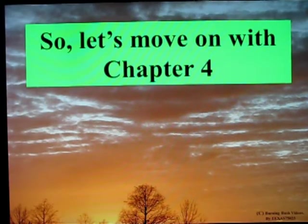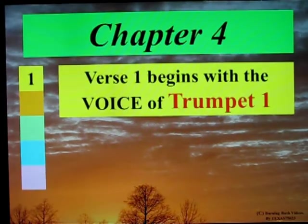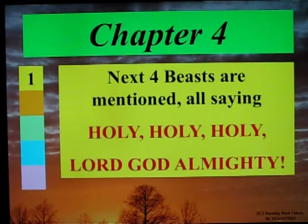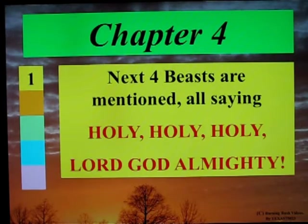Let's move on to Chapter 4. Verse 1 begins with the voice of a trumpet, number 1. Then there are 24 elders and seven lamps, which are the seven spirits of God. Next, four beasts are mentioned, all saying, 'Holy, Holy, Holy, Lord God Almighty.'